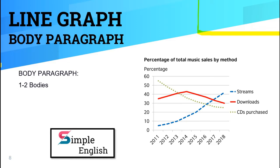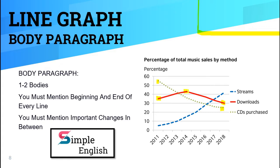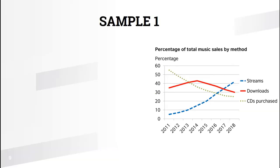Important things you have to know about writing body paragraphs: you have to write one or two body paragraphs for a line graph — it depends on each graph, there is an optimal rule for it. Second, you must mention the beginning and the end of every single line. Third, you must mention important changes in between. For example, in the red line there is a little increase and then decrease, so that trend should be mentioned.